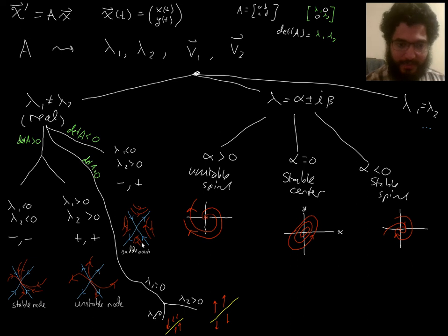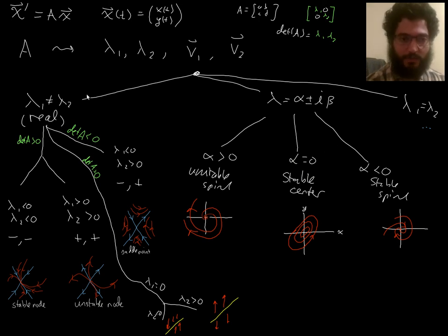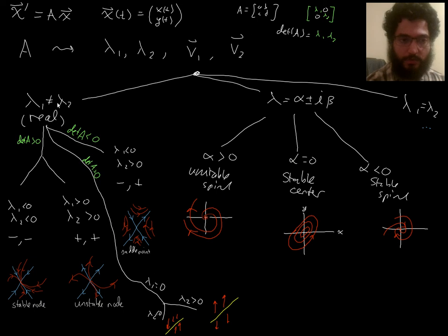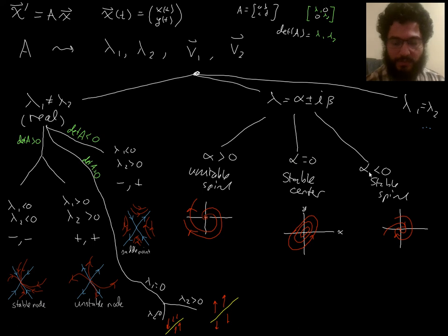If you're in the complex eigenvalue branch, the determinant is definitely positive. That's helpful: if the determinant is negative, you know you must be in the real branch at a saddle point. To summarize: if the determinant is negative, you're at a saddle point; if positive, you could be in the complex branch or the real eigenvalues branch with same-sign eigenvalues.